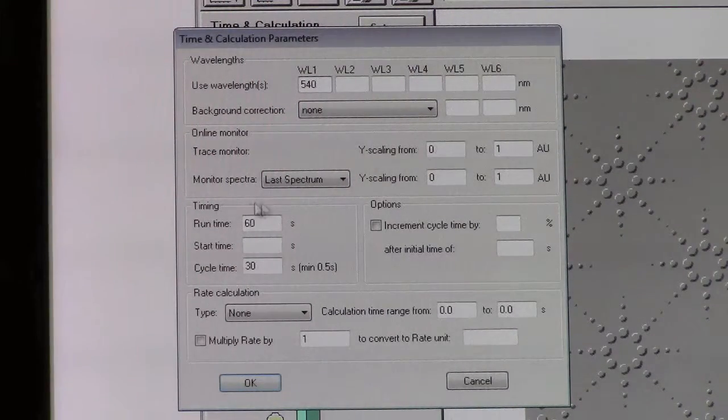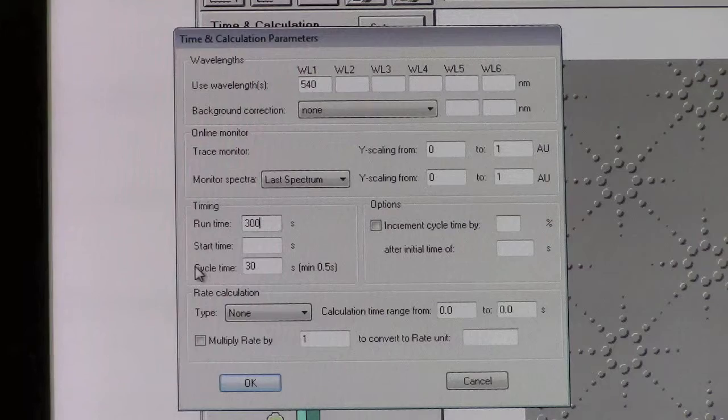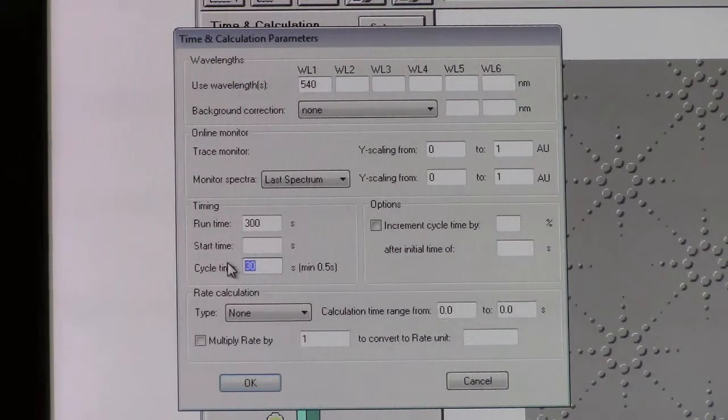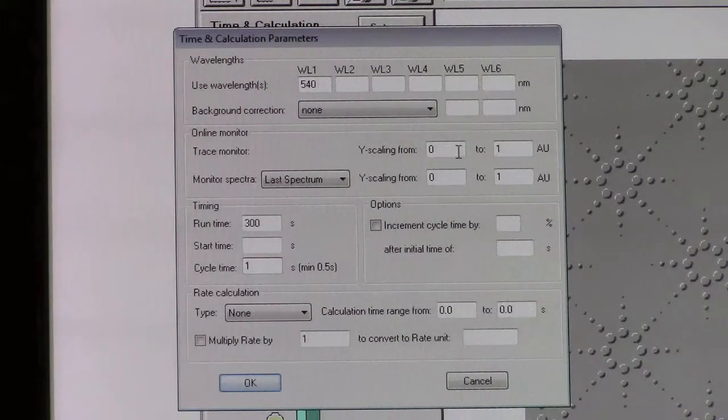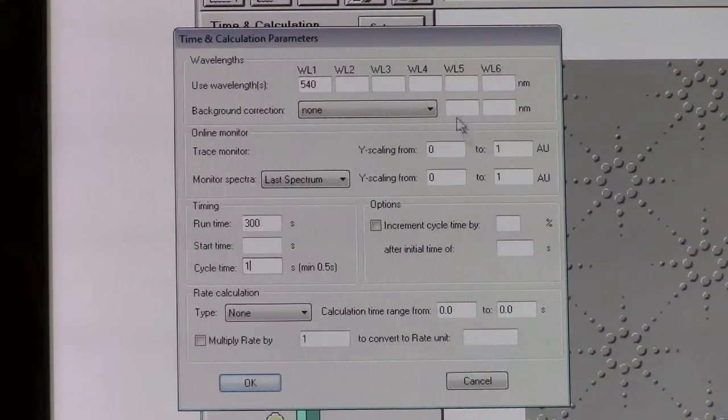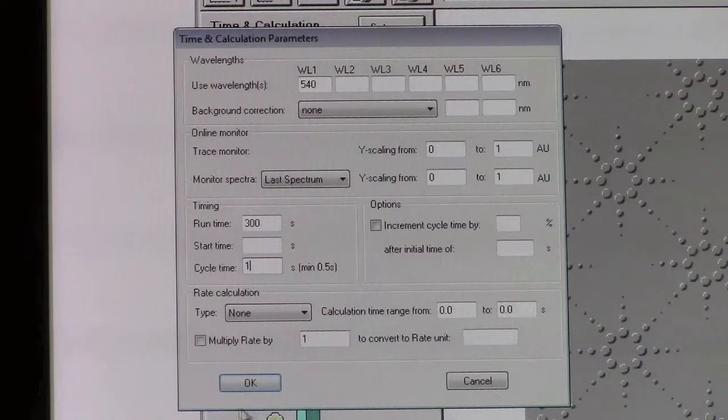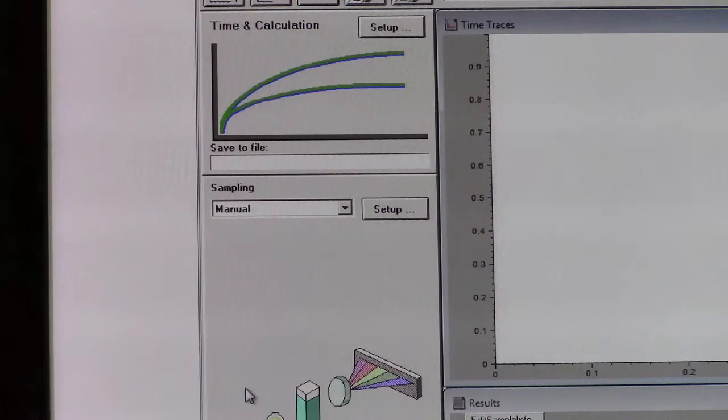You'll also need to set up the timing, which is further down to the left. Set the run time to 300 seconds or 5 minutes, which should be more than enough data, and set the cycle time to 1 second, so a new spectrum is taken every second. This is essentially the sampling frequency. All other parameters can remain the same. The scaling from 0 to 1 absorption units is fine given the materials. Click OK to complete the setup.